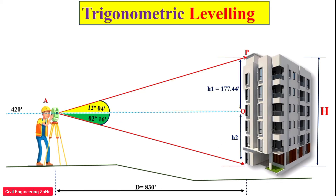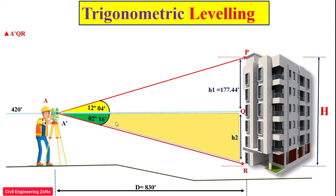To calculate the value of h2, we take the lower triangle A-dash, Q, and R. Using the same approach, we can easily calculate the value of h2, which is 32.85 feet.